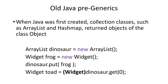Back in the old days when Java was first created, it didn't use generics. Certain collection classes such as ArrayList and HashMap would take objects as parameters and return objects of the class Object. In this example, ArrayList is creating an object called Dinosaur. We don't specify the type of objects that will be in the ArrayList, so they will just be objects of the class Object.